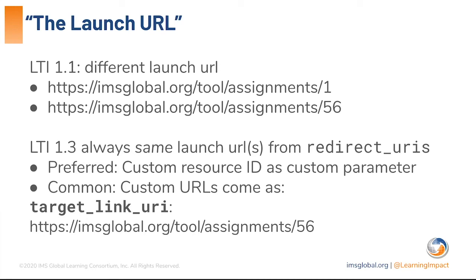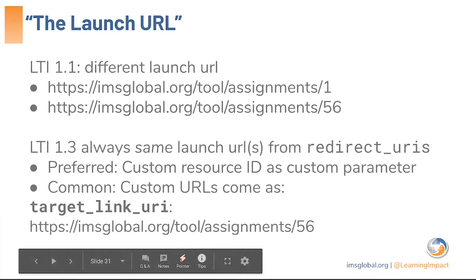It's still very common to use custom URLs that people want to access directly. This information comes across in the target link URI claim, which appears in both legs of the LTI launch. In the second leg, there is a claim within the ID token called 'target link URI' containing the full URL of the desired resource. If you're working with a legacy application, upgrading from LTI 1.1, or the vendor prefers target link URIs over custom parameters, make sure you always look at the target link URI claim.